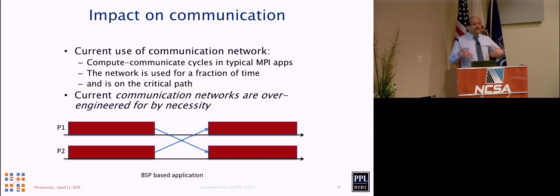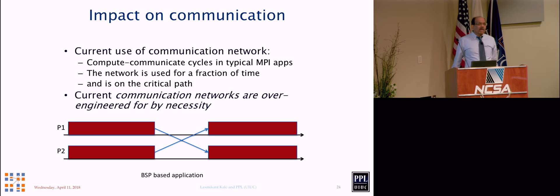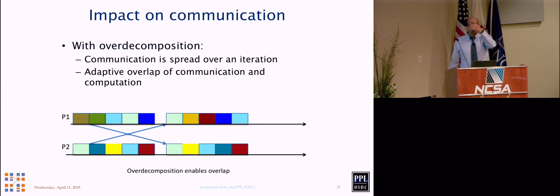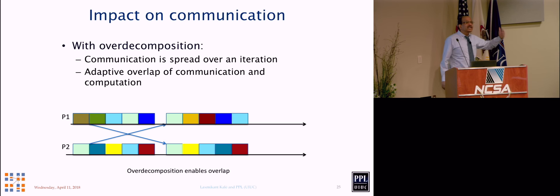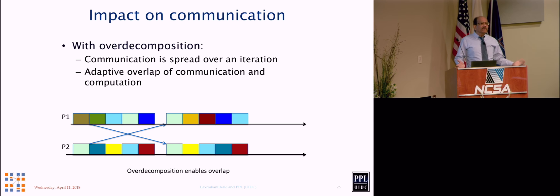CHARM++ can help fill that hole, at least in part. In a typical MPI computation — compute, communicate, compute, communicate — you can try to move sends up and receives down, but you still spend a lot of time waiting for communication. With over-decomposed computation you get two benefits: injection happens throughout the time step because multiple objects are injecting, and latency is tolerated because you have something else to do while waiting. You get much better overlap and use the communication network more efficiently.